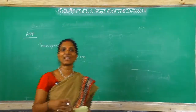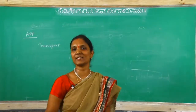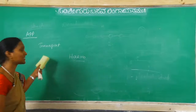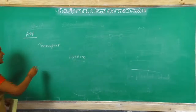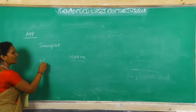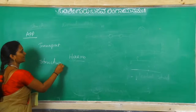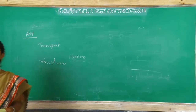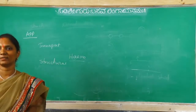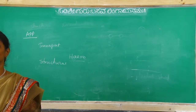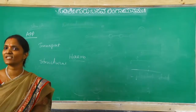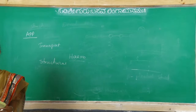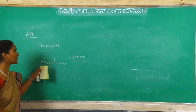Hemoglobin transports oxygen and carbon dioxide, so this hemoglobin acts as a transport agent. Proteins also act as structural materials - they give one structure or protection. Keratin and collagen are examples of structural material proteins.